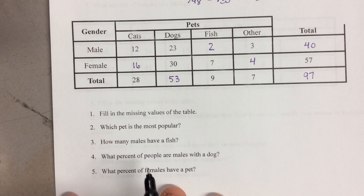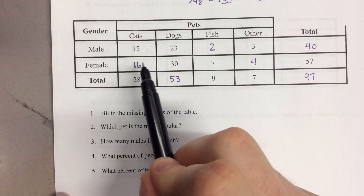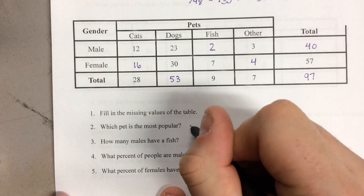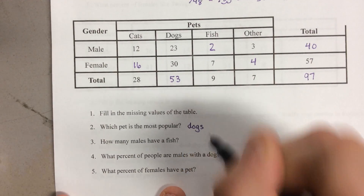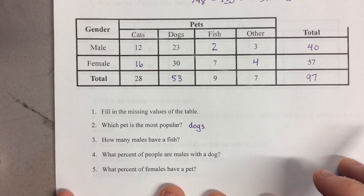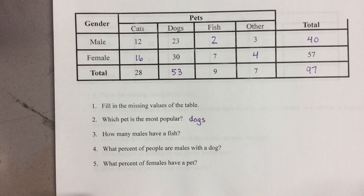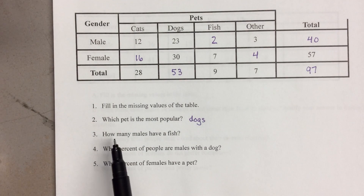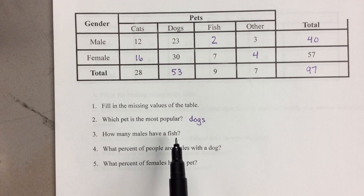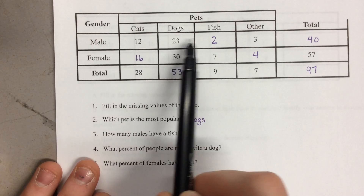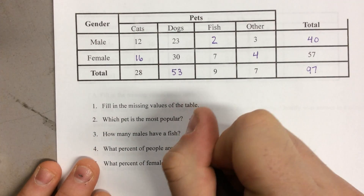Which pet is the most popular? I'm looking at my pets — I have 53 people who said dog, so in this table dogs is the most popular. When answering these questions, don't put your own opinion to it; go with the data that's given. The next question: how many males have a fish? Looking at males with a fish, there are just two.